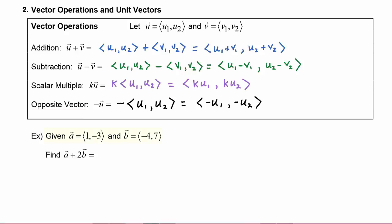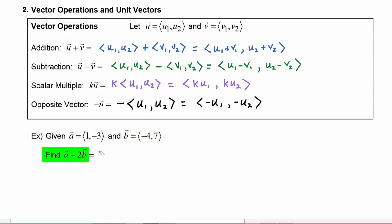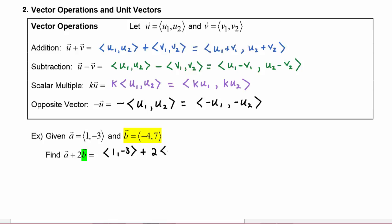In this example, we are given that vector a is the vector (1, -3) and vector b is the vector (-4, 7). We are being asked to find vector a plus two times vector b. So we know that vector a is (1, -3) plus two times vector b, which is (-4, 7).